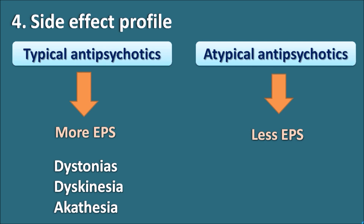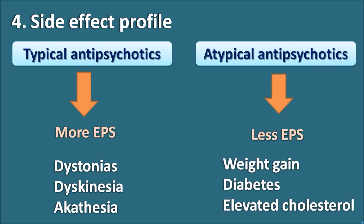Atypical antipsychotics produce fewer extrapyramidal side effects, but they can cause side effects like weight gain, diabetes, and elevated cholesterol. So while atypical antipsychotics do not produce the more troublesome extrapyramidal effects, they can cause weight gain and modify glucose and cholesterol levels in the body.